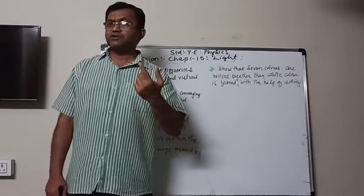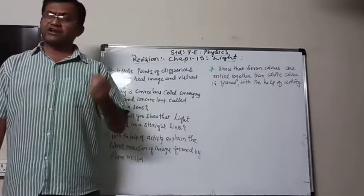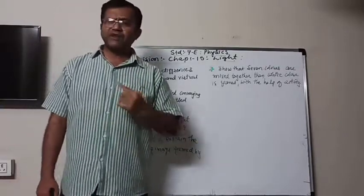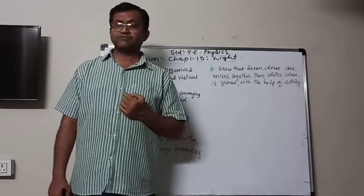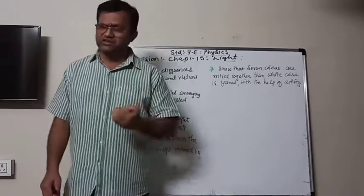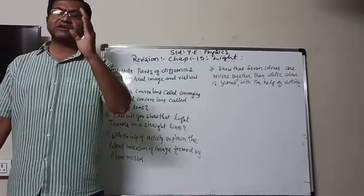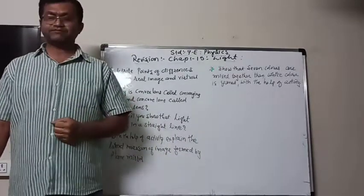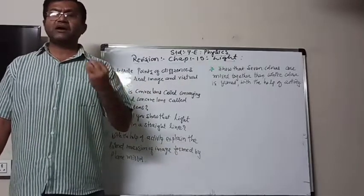If you move it not so fast, you will be able to see the individual colors. But when it moves very fast, all the colors mix with each other and only the white color is visible. That is the way to demonstrate that mixing seven colors produces white.